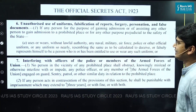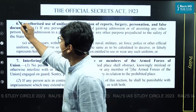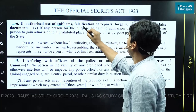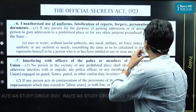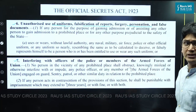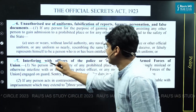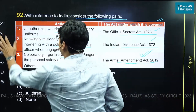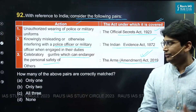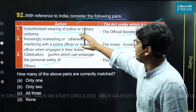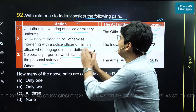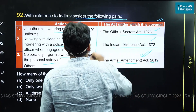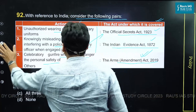Regarding the Official Secrets Act: Section 6 and Section 7 mention unauthorized use of uniforms, falsification of reports, forgery, personation, and false documents. Section 7 specifically mentions interfering with officers of the police or members of the armed forces. So both the first and second actions — unauthorized wearing of uniforms and knowingly interfering with a police officer — are actually covered under the Official Secrets Act.